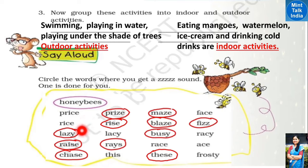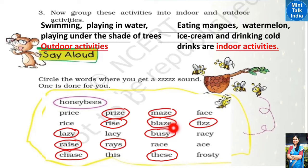Words with a Z sound at the end: lazy, raise, chase. Similarly raise also ends in Z sound. Maze, blaze, busy, these, and fizz — all have a Z sound.